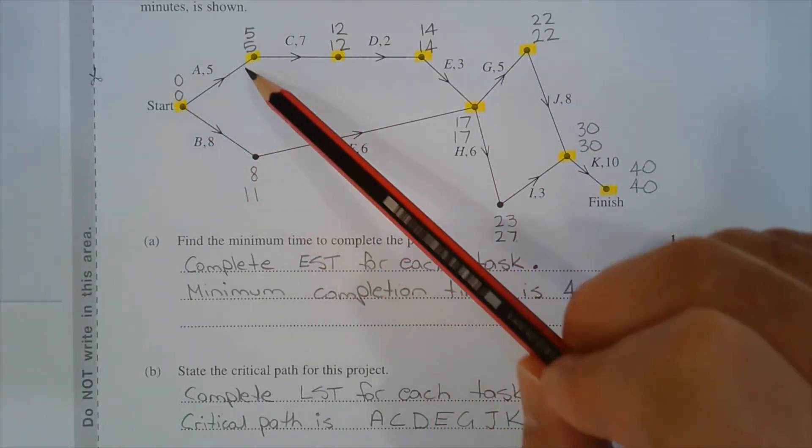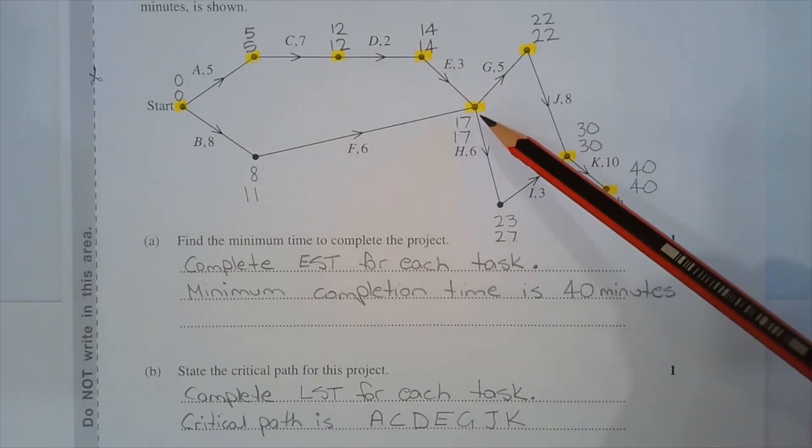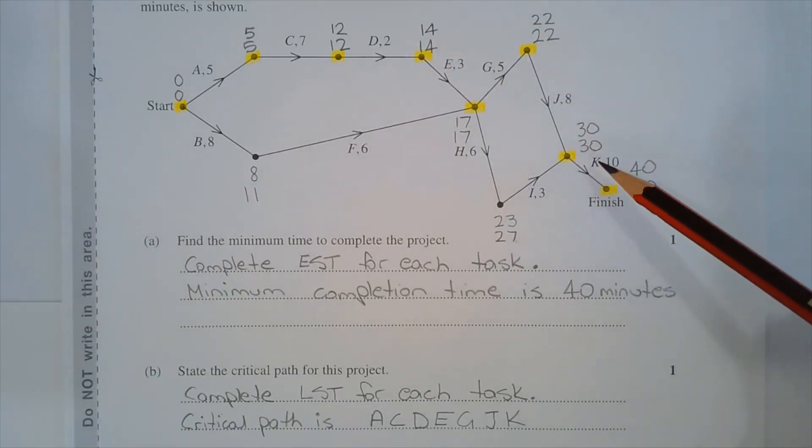So the critical path is A, C, D, E, G, J, and K.